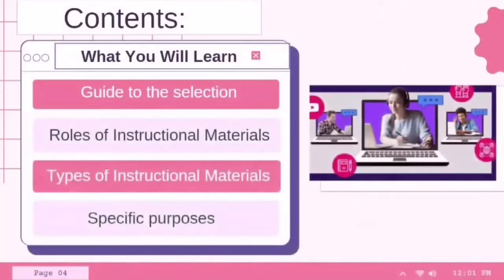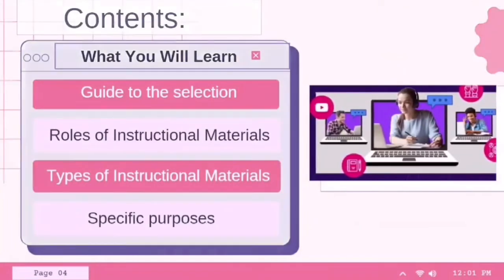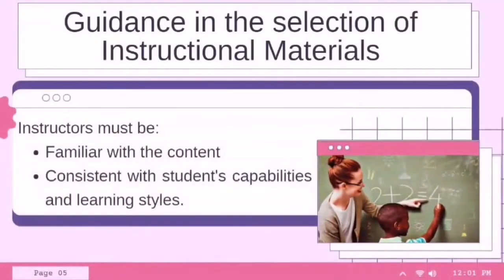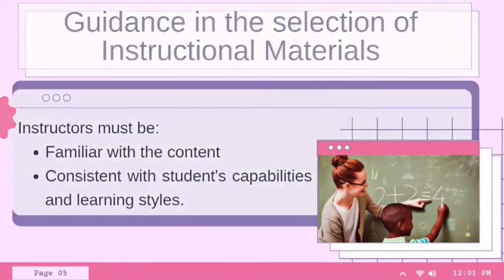So what are the contents we have to learn as we go along with our discussion? We are given four main contents. First is the guide to the selection of instructional materials. Second, introduction to the various roles of instructional materials in different teaching or learning situations. Third, different types of instructional materials available today. And lastly, selecting suitable materials for specific purposes.